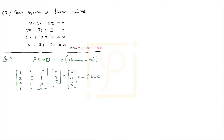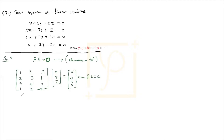Now that we have the equation in this form, the next step is to reduce this matrix into echelon form. Recall that echelon form means all values below the diagonal of the matrix are zero. We will use row operations to make this an echelon form. First, we will try to make the three elements in the first column below the first row all zero.